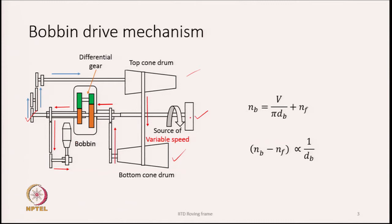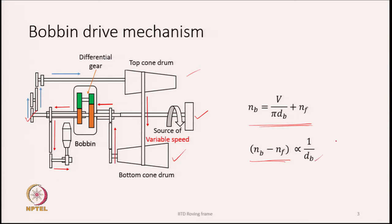From the bottom cone drum, following the red arrows, the motion goes through a set of gears to a differential gear. The differential gear consists of a housing with four sets of gears, and the output goes finally to the bobbin. The speed to the bobbin is a resultant of the speed from the main shaft and the speed from the bottom cone drum through the differential gear. The bobbin speed equation is: n_b = v/(π·d_b) + n_f, and the winding speed (n_b − n_f) is inversely proportional to the bobbin diameter.